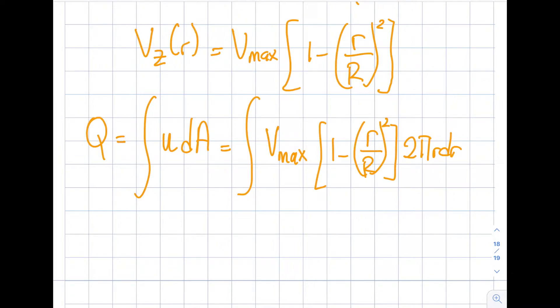So, 1 minus (r/R)² times dA. I discussed this in the previous mini segments, so I'm not going to repeat myself, but it is 2πr dr.